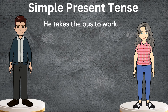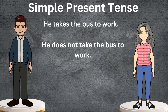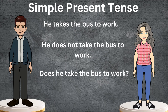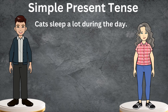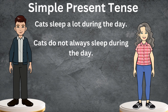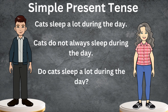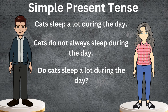Next sentence is: he takes the bus to work. The negative sentence would be: he does not take the bus to work. Or: does he take the bus to work? Our next sentence is: cats sleep a lot during the day. The negative sentence would be: cats do not always sleep during the day. Or the interrogative one is: do cats sleep a lot during the day?